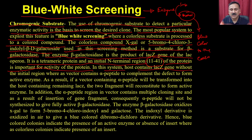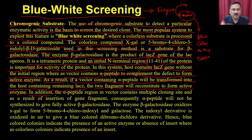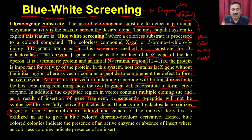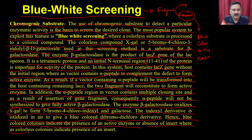In this system, the host contains the lacZ gene without the initial region, whereas the vector contains the alpha peptide to complement the defect and form the active enzyme. If a vector containing the alpha peptide is transformed into the host containing the remaining lacZ, the two fragments together form the active enzyme. The alpha peptide region in the vector contains an MCS, and insertion of a gene fragment prevents the alpha peptide from being synthesized, so the fully active beta-galactosidase is not formed. The enzyme beta-galactosidase oxidizes X-gal to form 5-bromo-4-chloroindoxyl and galactose; the indoxyl derivative is then oxidized in air to give a blue-colored dibromo-dichloro derivative. Hence, blue-colored colonies indicate an active enzyme and absence of insert, whereas colorless colonies indicate presence of an insert.